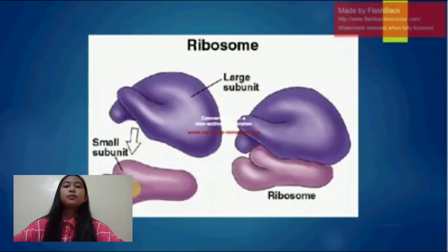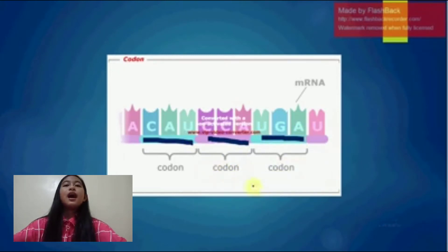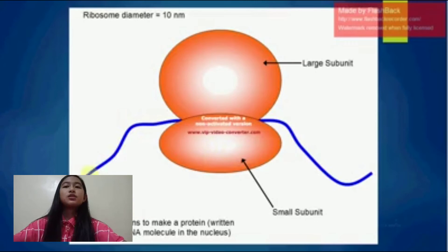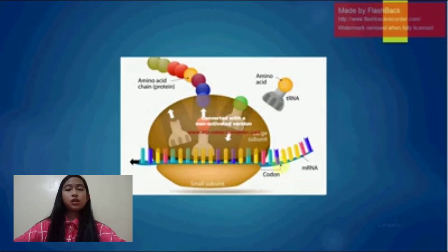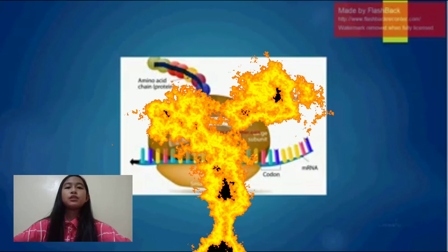The ribosome is a very large complex of RNA and protein molecules. Each three-base stretch of mRNA, or triplet, is known as a codon, and one codon contains the information for a specific amino acid. As the mRNA passes through the ribosome, each codon interacts with the anticodon of a specific tRNA molecule by Watson-Crick-base pairing. This tRNA molecule carries an amino acid at its three prime terminus, which is incorporated into the growing protein chain. The tRNA is then expelled from the ribosome.